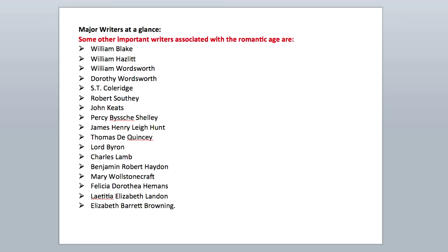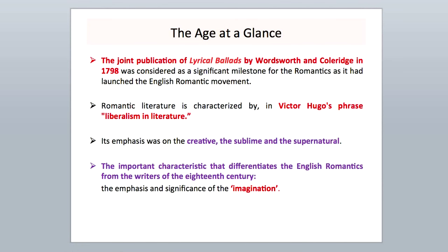Looking at the major writers at a glance, some of the important writers associated with the Romantic Age are William Blake, William Hazlitt, William Wordsworth, Dorothy Wordsworth — the sister of William Wordsworth — S.T. Coleridge, Robert Southey, John Keats, P.B. Shelley, James Henry Leigh Hunt, Thomas De Quincey, Lord Byron, Charles Lamb, Benjamin Robert Haydon, Mary Wollstonecraft, Felicia Dorothea Hemans, Letitia Elizabeth Landon, and Elizabeth Barrett Browning. The Age at a Glance: the joint publication of Lyrical Ballads by Wordsworth and Coleridge in 1798 — a collaborative effort — was considered a significant milestone for the Romantics as it launched the English Romantic movement.